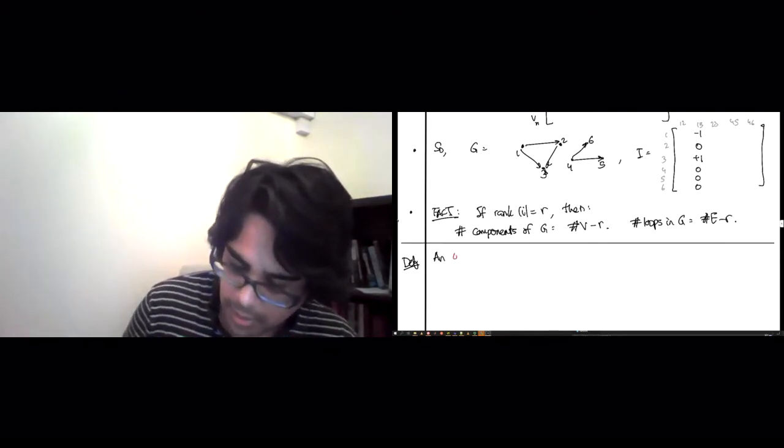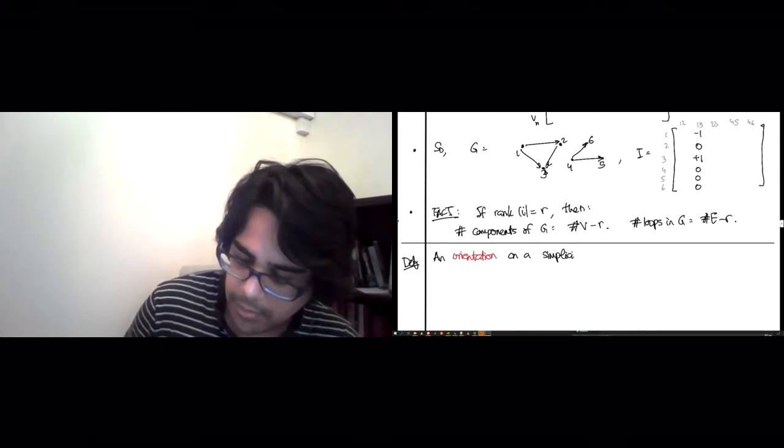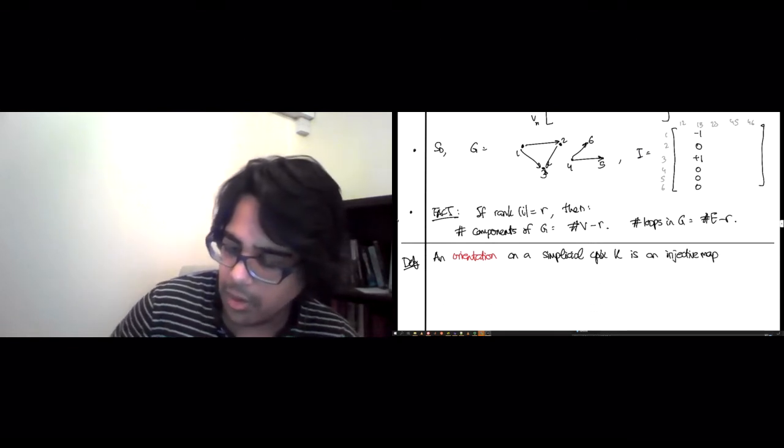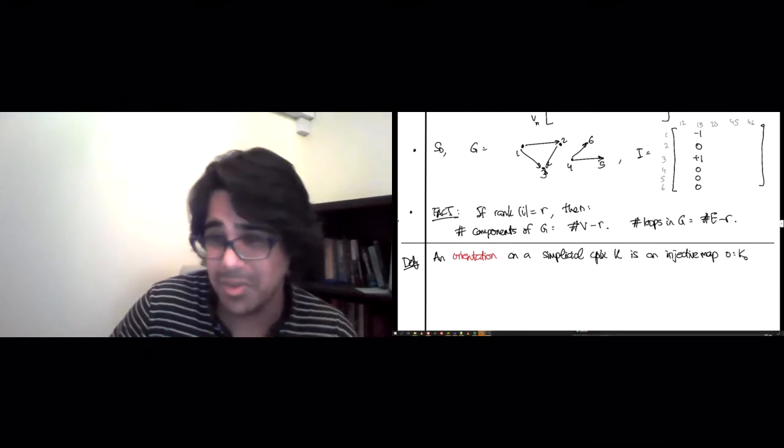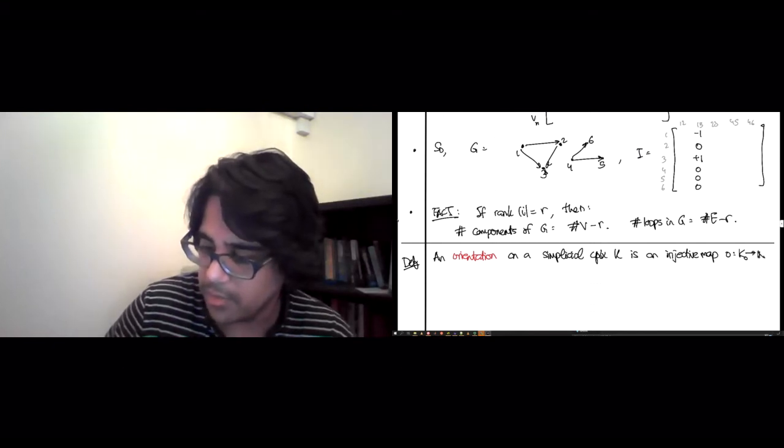An orientation on a simplicial complex K is an injective function, which I'll call O. It starts from the vertices of K, which we've called K0 in the past, to the natural numbers.